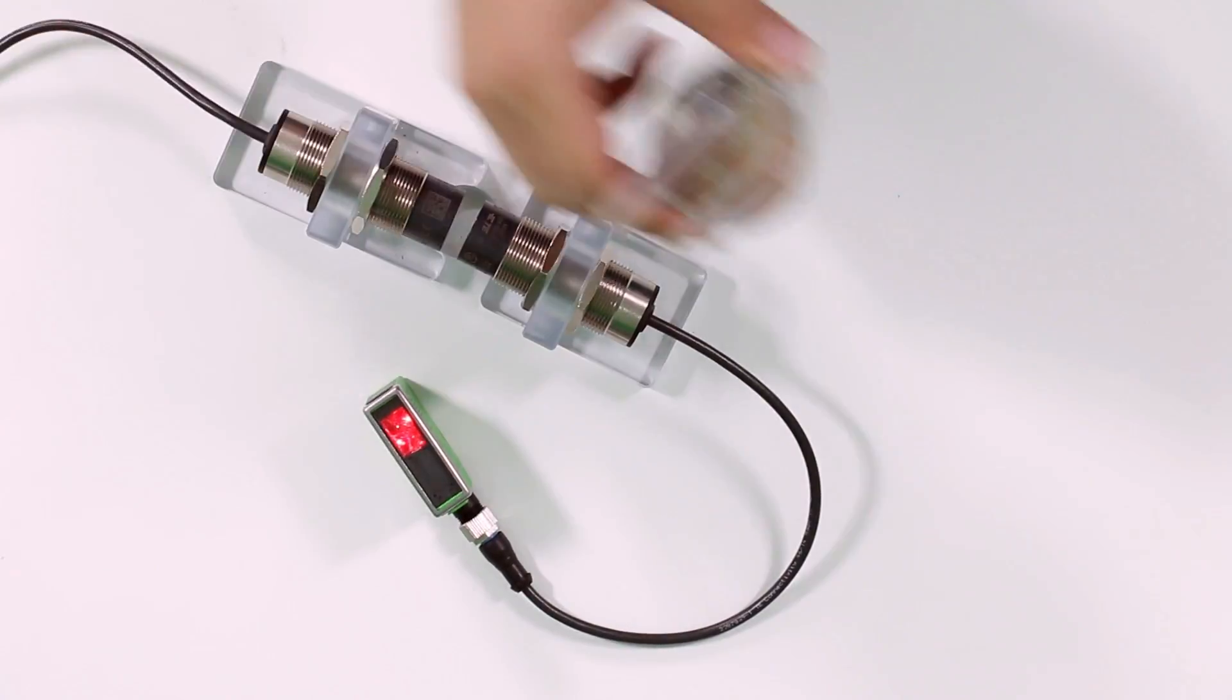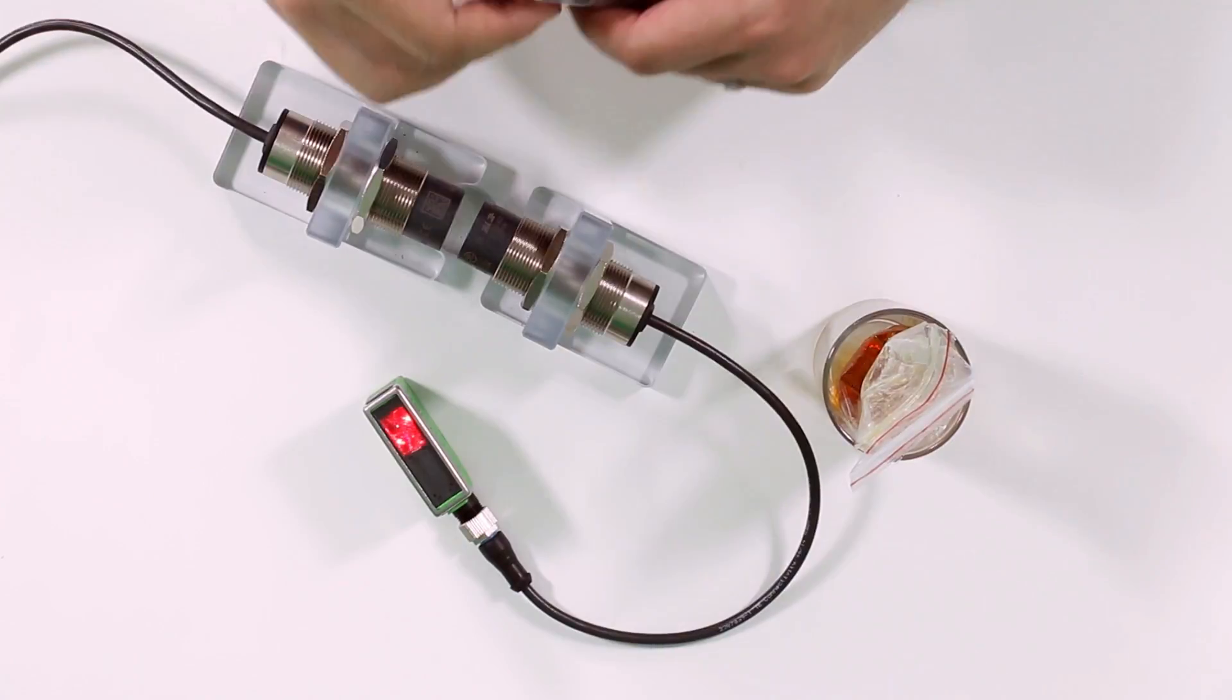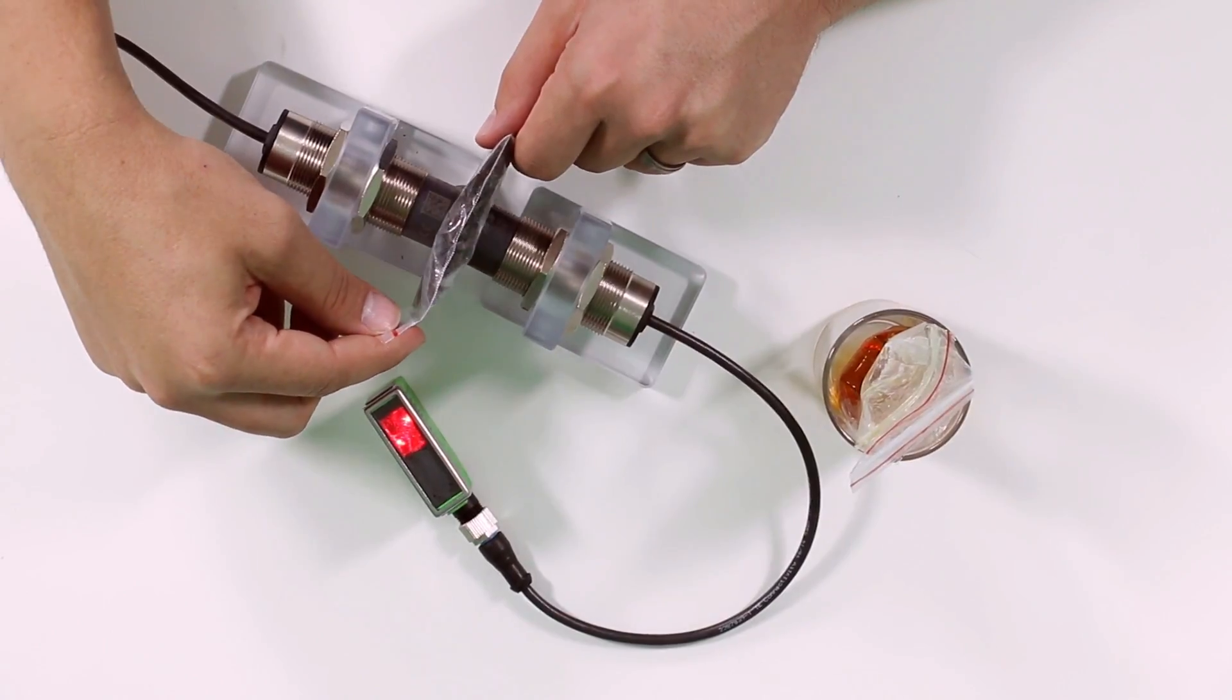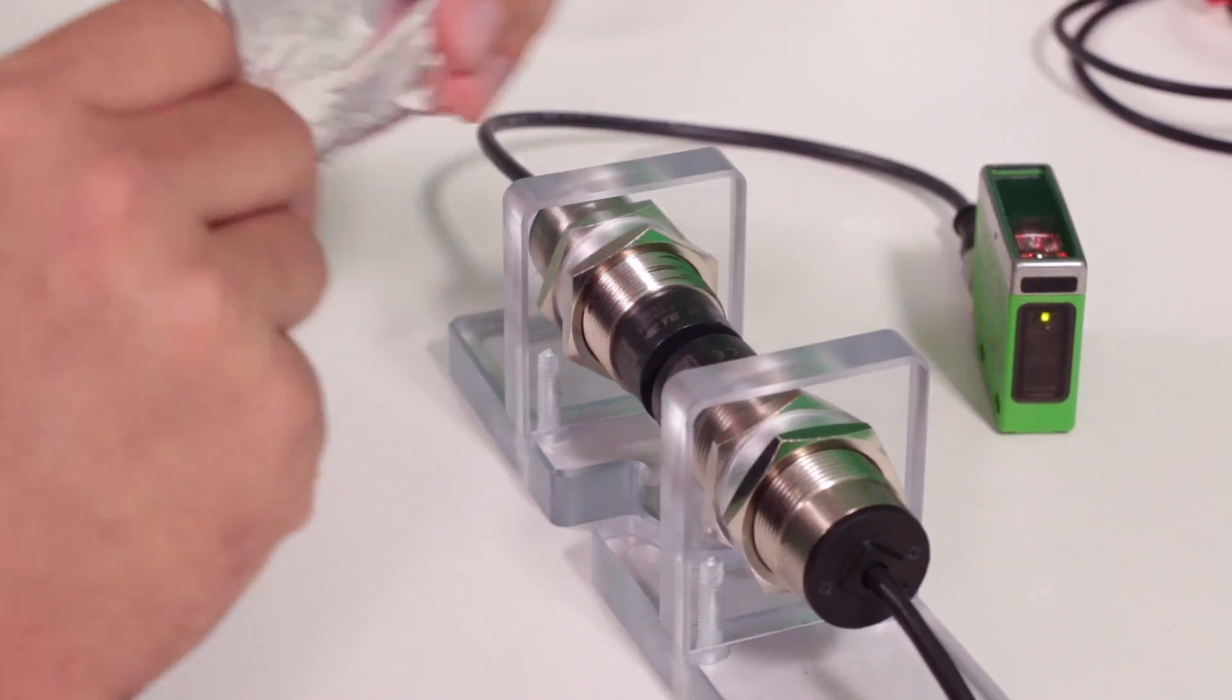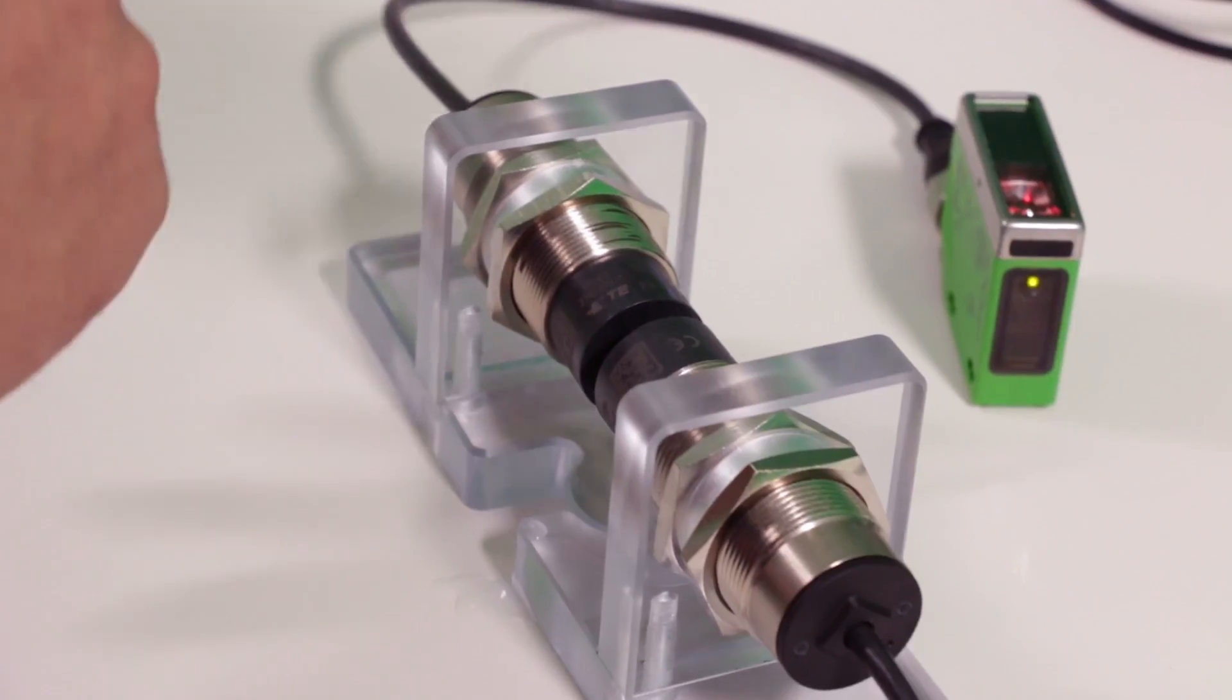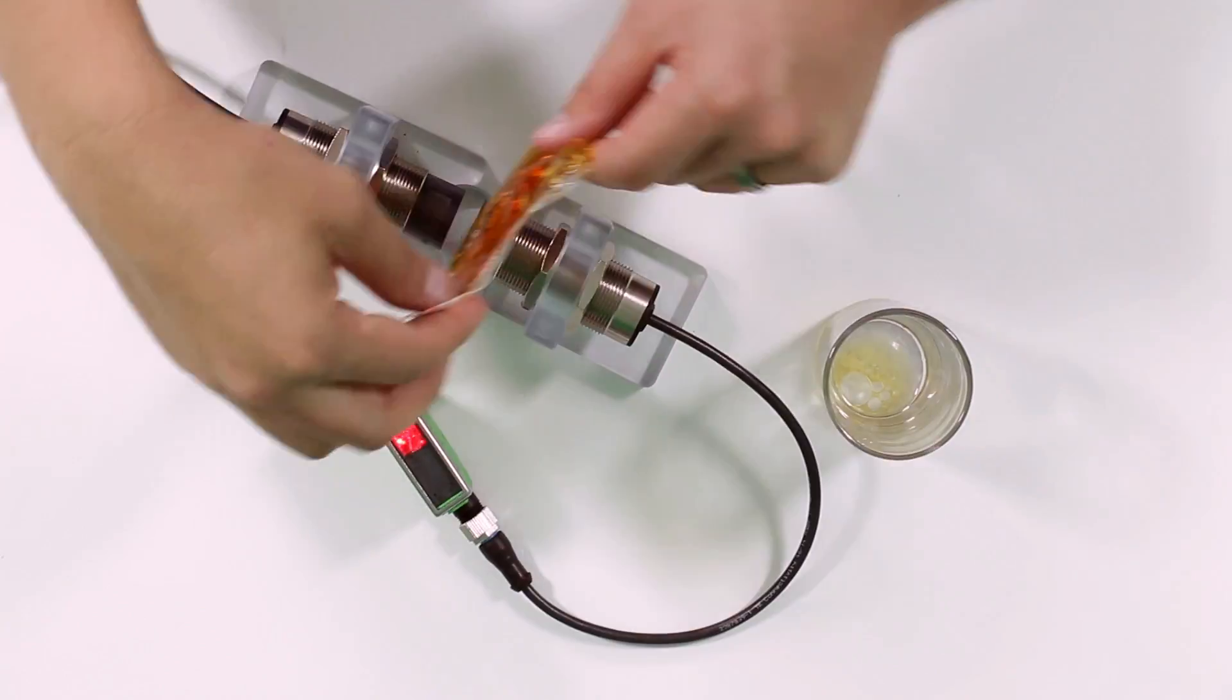I have here a few baggies to simulate a harsh environment. The first is dirt. Thin that down. You can see that ARISO continues providing power to the light. Here's some water. Still not a problem. And a bag of oil. Still no problem.